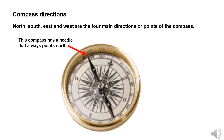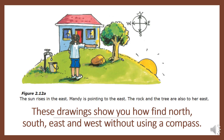There are four main directions: north, south, east, and west. These can be measured or indicated using a compass, as shown in the picture on this slide. The compass needle always points to north.